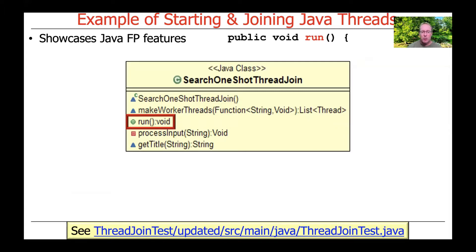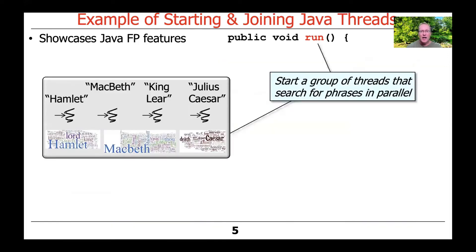If you go to the threadjointest updated folder in my GitHub repository, you can find threadjointest.java, and we're going to look at the run hook method. What this method does is start a group of threads that will search for phrases in parallel. For each thread, it's going to be associated with a work of Shakespeare — one thread to process Hamlet, one for Macbeth, searching for phrases in the text. King Lear, Julius Caesar, Twelfth Night, As You Like It — the list goes on.